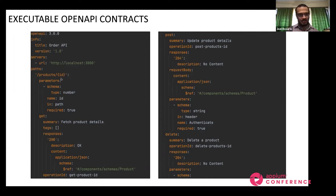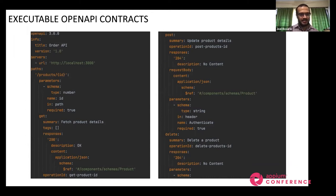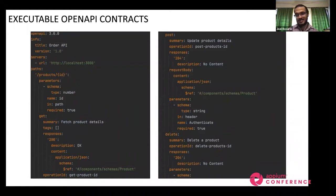This is not a document — it's an executable specification. It's important to execute these because it's easy to read a document and make mistakes. The contract validates the consumer's expectations of how the API would behave, and it also validates that the API is honoring those expectations and won't break any consumers.